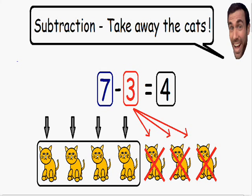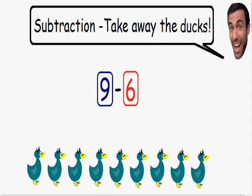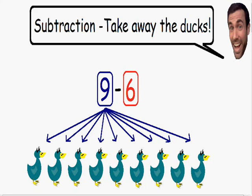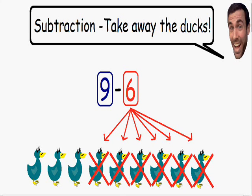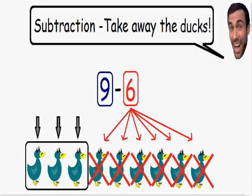Let's go over an even harder example by taking away the ducks. Here we have nine minus six. So we're starting with nine ducks and we are subtracting six, which means we are taking away six ducks. So if we start with nine and we take away six, how many ducks do we have left over? Well we have three ducks left over. So nine minus six is equal to three.